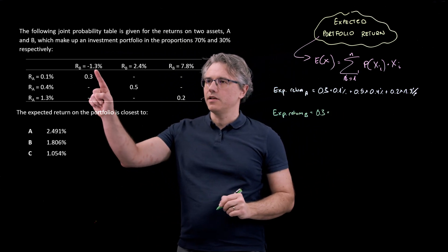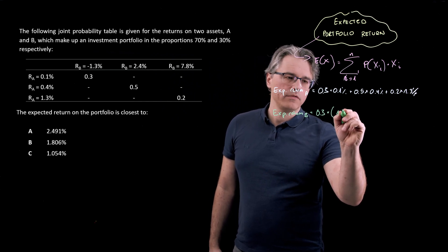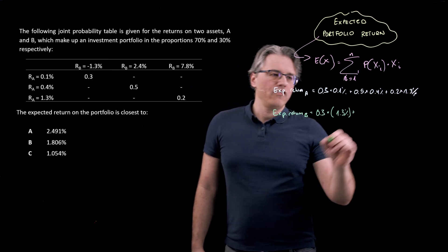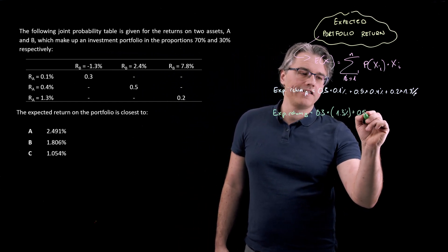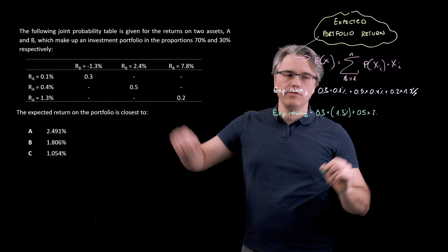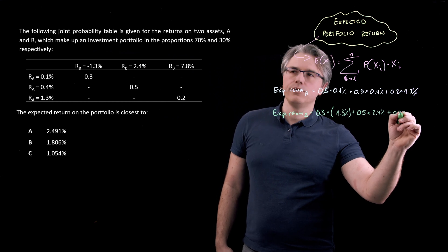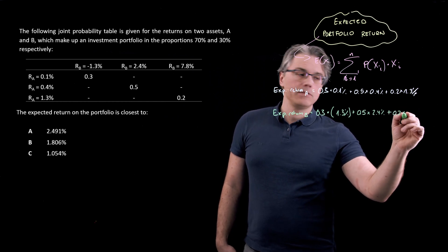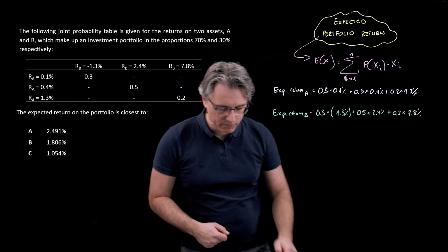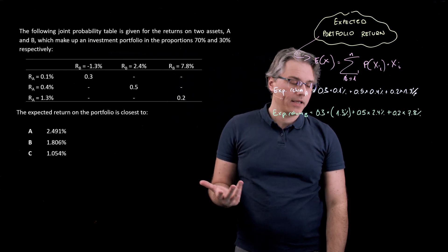So let me put this in a bracket, negative 1.3% to signify that it's negative. Then half a probability or 50% probability that it will hit a result of 2.4. And finally, a 20% or 0.2 times an expected outcome of 7.8%. So let's now do this on the calculator.